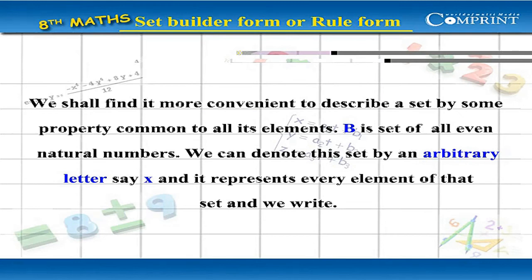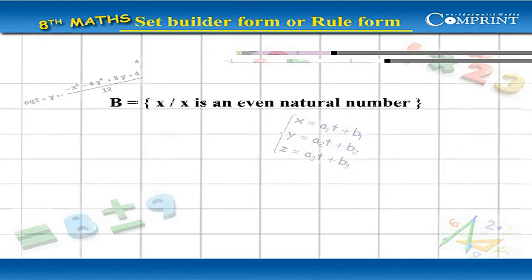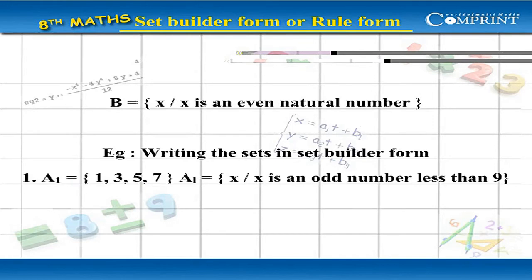B is set of all even natural numbers. We can denote this set by an arbitrary letter say x and it represents every element of that set and we write B equals the set of x by x is an even natural number.